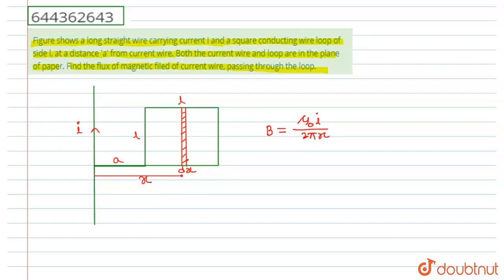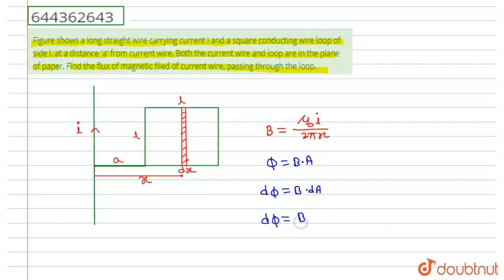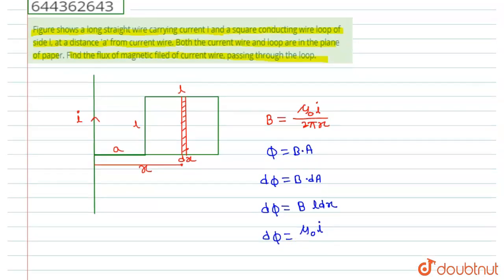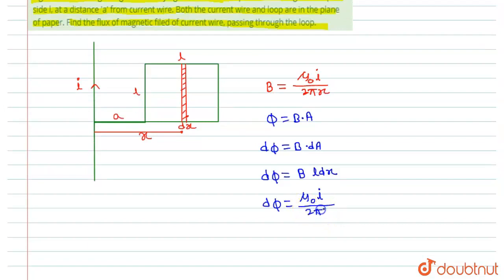As we know, flux φ equals B times A. The flux through this small portion is dφ, and dφ equals B into dA. This dA equals dx into l. So dφ equals B times l times dx. Substituting the value of B, dφ equals (μ₀I / 2πx) times l times dx. This is the flux through the small portion.